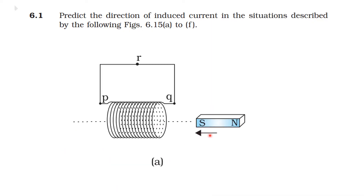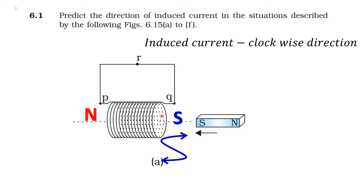See the arrow mark? It is on the left side, so the south pole of the bar magnet is moving towards this coil. According to Lenz's law, the same pole has to be produced. That is, here south pole is produced and on the other side north pole is produced. So, if south pole is produced here, the induced current direction is clockwise direction.